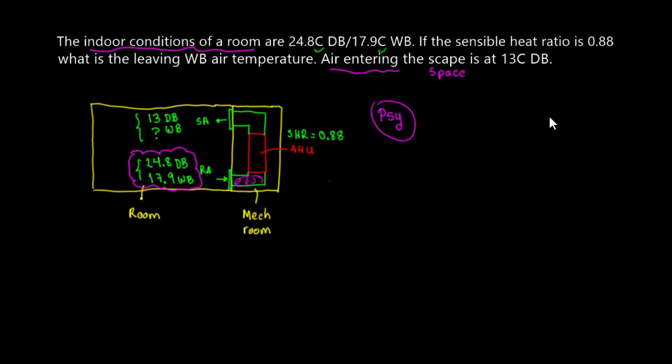As we've seen on the psychrometric chart, it's very important to know what every line represents. Problems can be difficult, but as long as you know how to intersect the lines you'll be able to find the air properties. Don't forget this important rule: you only need two properties to know all of them — dry bulb and wet bulb give you relative humidity, humidity ratio, specific volume, specific enthalpy, everything. You can also always draw lines on the psychrometric chart to find your process.